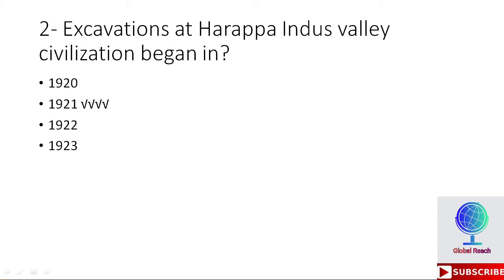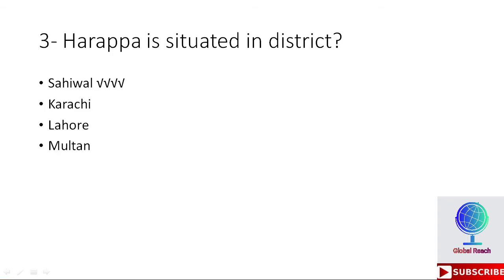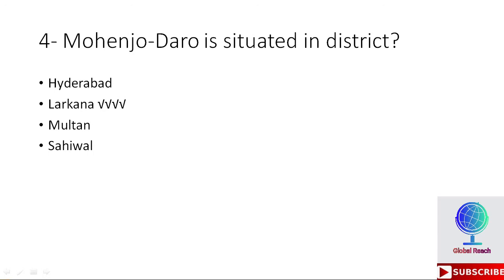MCQ 3: Harappa is situated in district — Sahiwal, Karachi, Lahore, or Multan? The right option is Sahiwal. Harappa is situated in district Sahiwal. MCQ 4: Mohenjo-daro is situated in district — Hyderabad or Larkana? The right option is Larkana. Mohenjo-daro is situated in district Larkana.